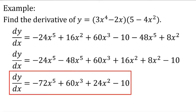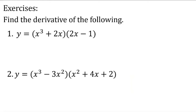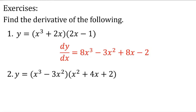So the final answer is dy over dx equals negative 72x to the fifth plus 60x cubed plus 24x squared minus 10. Try these exercises — find the derivative of the following. Number one: y equals x cubed plus 2x times 2x minus 1. Number two: y equals x cubed minus 2x squared times x squared plus 4x plus 2. Rob answers number one: dy over dx equals 8x cubed minus 3x squared plus 8x minus 2. The correct answer is dy over dx equals 8x cubed minus 2x squared plus 8x minus 2.